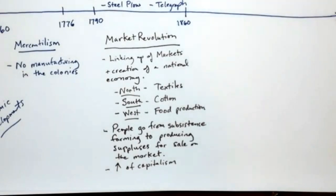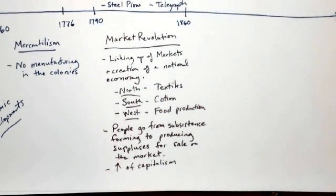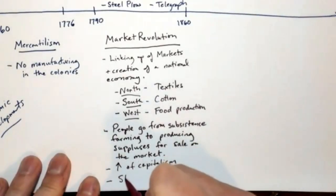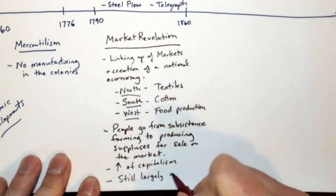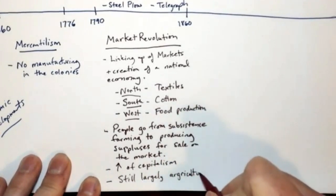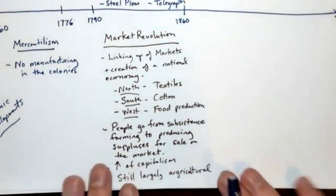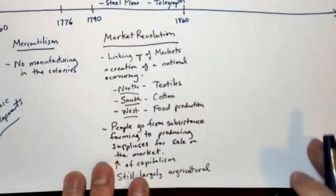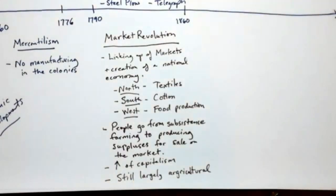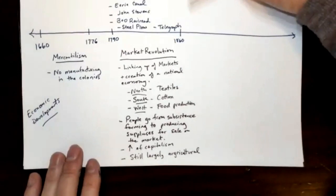This is basically the beginning of the growth of capitalism in the United States. More and more people are thinking about their economy in a capitalistic way — how do I maximize the amount of profit I can make? What the market revolution is not, though, is the beginning of full-scale industry. You have to understand that industry is not the dominating form of production in the economy. America during this time period is still largely agricultural. We need to understand that because we're going to see shifts and development towards an industrial society as we move closer to our next era, which is the Second Industrial Revolution.